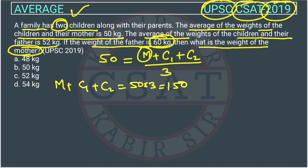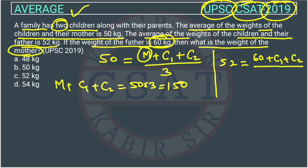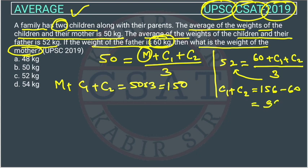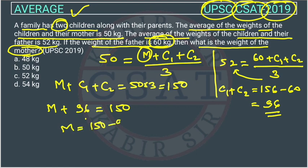From the second condition, the average weight of children and their father is 52, so: 52 = (60 + C1 + C2) / 3. This gives C1 + C2 = 52 × 3 − 60 = 156 − 60 = 96.